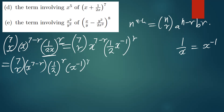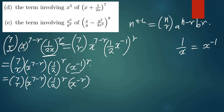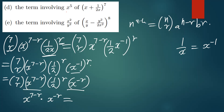When we simplify further, we have 7 choose r, then x to the 7 minus r, then 1 over 2 to the r, then x to the power negative r. Now I'm going to take the parts with x — that's x to the 7 minus r times x to the power negative r — and equate it to x to the power 5, since the question asks us to find the term that has x to the power 5.